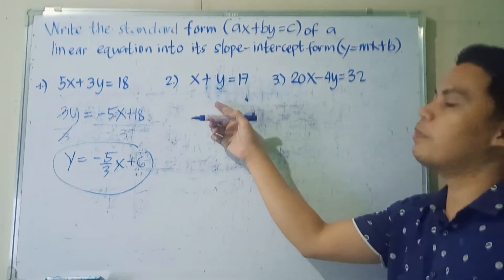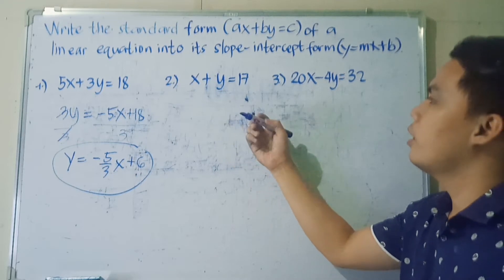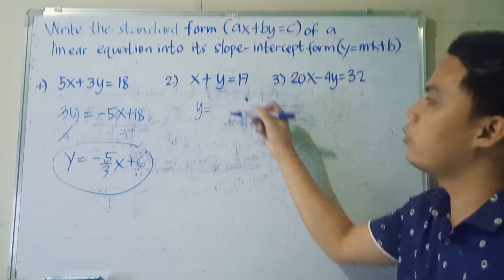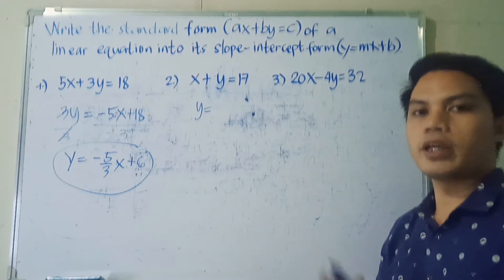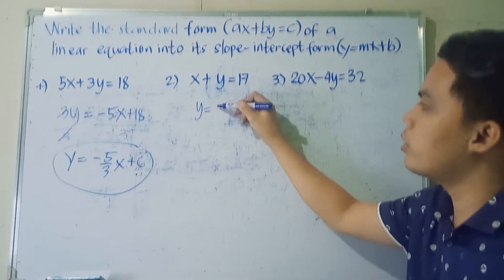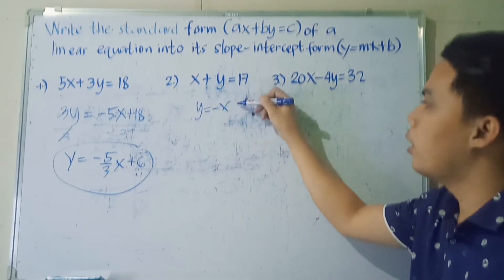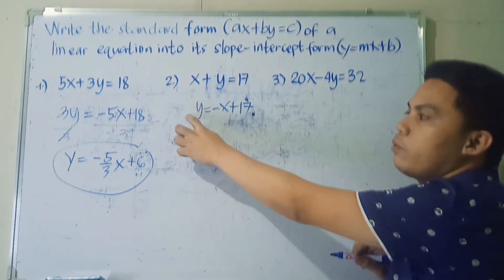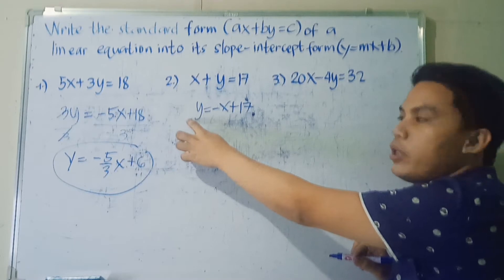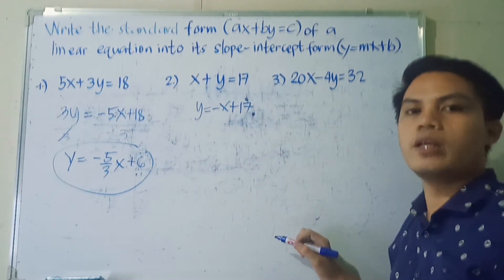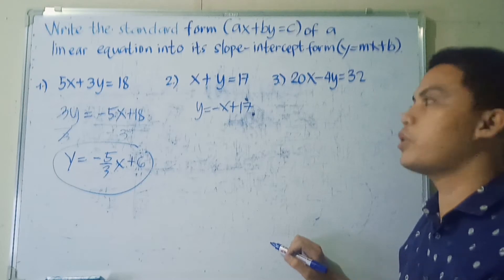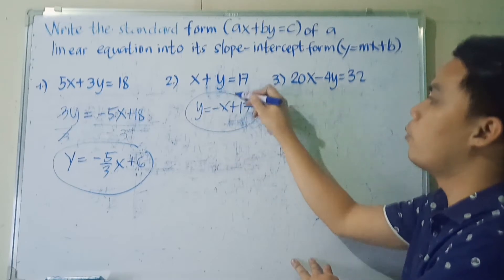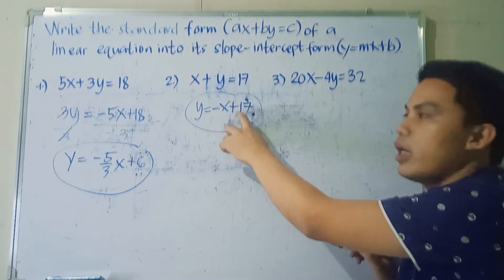Number 2: we have X plus Y is equal to 17. Same process — we keep Y on the left side and transpose X to the right side, where it becomes negative X, and bring down the constant positive 17. Since the numerical coefficient of Y is already 1, there is no need to divide both sides by any coefficient. So our final answer is Y is equal to negative X plus 17.